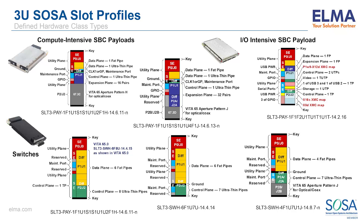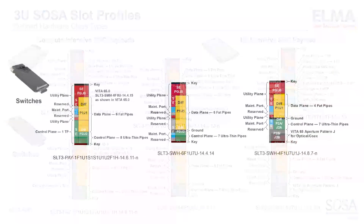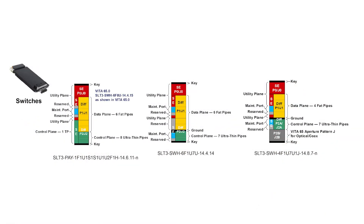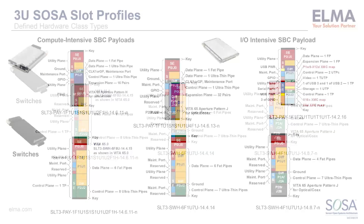On the bottom row, we find the three switch profiles: the first being an 8-data plane and 8-control plane switch. The second profile divides the data plane and control plane into two separate domains, separated by a ground. And the third is a dual-domain switch with an aperture for optical connectivity.